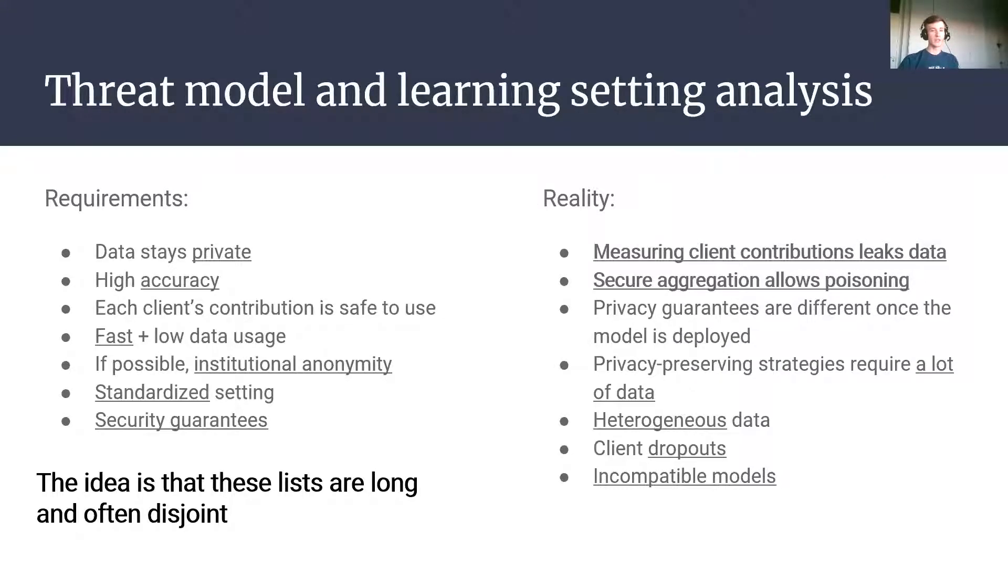So what is the underlying design issue of collaborative machine learning that allows this to happen? Well, the list of requirements, which is pretty long, and the two main points there are that firstly, the data stays private, and secondly, that the accuracy of the model is well maintained, doesn't necessarily meet the reality where when we try to allow for higher accuracy, we could potentially result in leakages of data, making it less private.